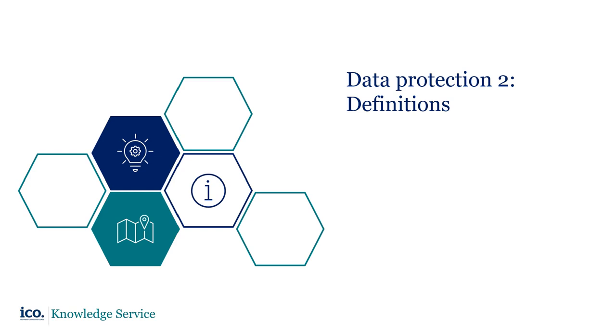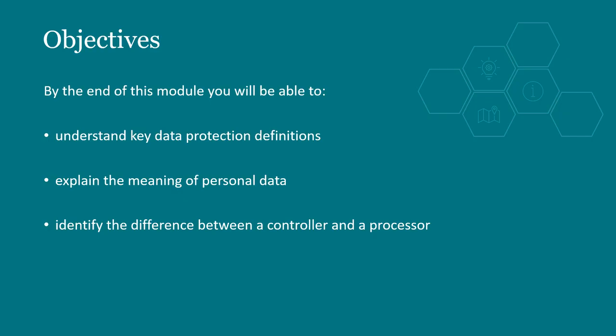Welcome to Module 2 of the ICO's Data Protection and PECA training. In this session, we are going to look at some key definitions in the UK GDPR and the DPA. By the end of the module, you will be able to understand key data protection definitions, explain the meaning of personal data, and identify the difference between a controller and a processor.